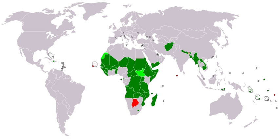Most developing countries have these criteria in common: high levels of poverty measured based on GNI per capita averaged over three years — for example, if GNI per capita is less than US $1,025 the country is regarded as a least developed country. Human resource weakness based on indicators of nutrition, health, education and adult literacy, for example low literacy levels. Economic vulnerability based on instability of agricultural production, instability of exports, merchandise export concentration, handicap of economic smallness, and the percentage of population displaced by natural disasters.